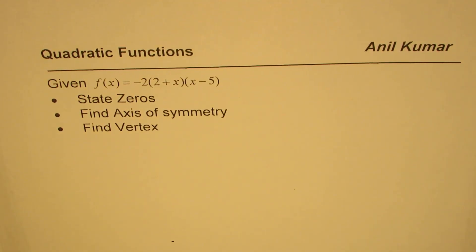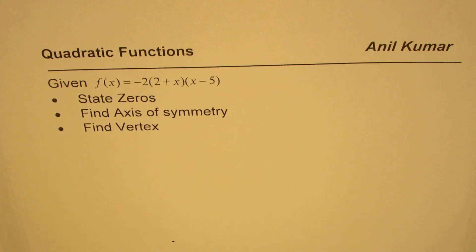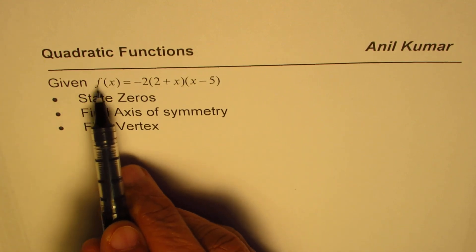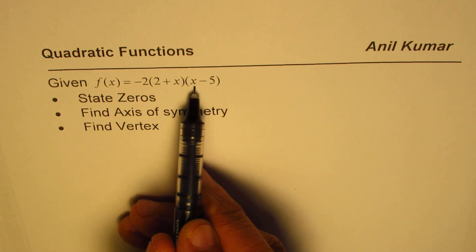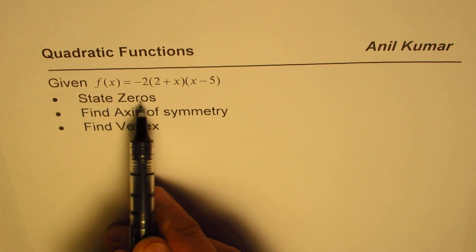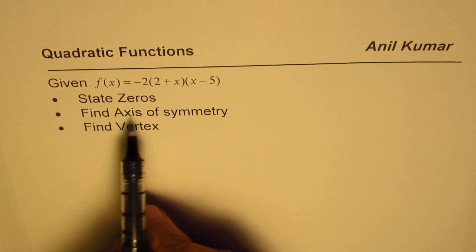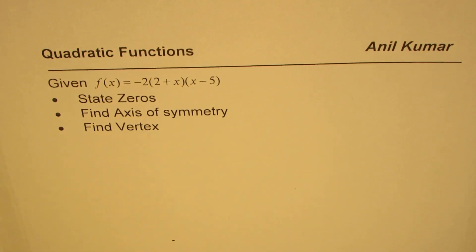I'm Anil Kumar sharing with you questions from the previous test paper. The whole idea is to learn from these questions so that you do far better. We are given the function f(x) = -2(2+x)(x-5). We have to state the zeros, find axis of symmetry, and find vertex.